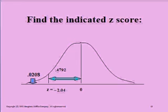Supposing that I know that this area here is 0.4792 and I want to know the z-score for the line below it. I know this entire half again is 0.5. If I take 0.5 and subtract 0.4792, I can find the area to the left of z. That area is 0.0208. I can then look this probability up on the table and find that my z-score is negative 2.04.